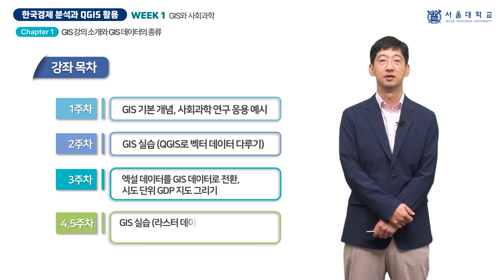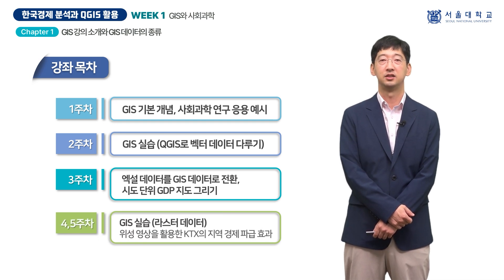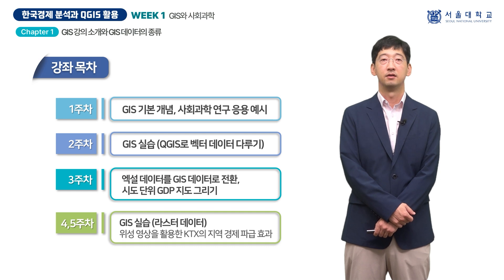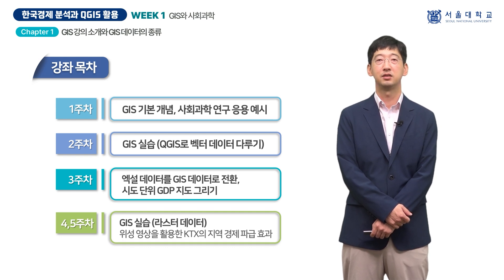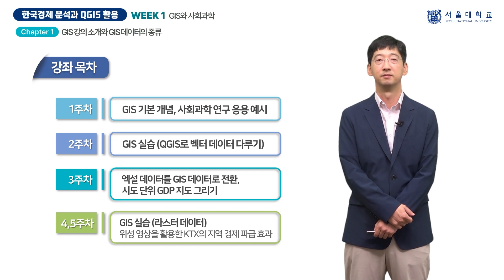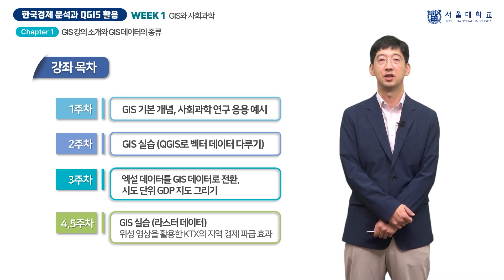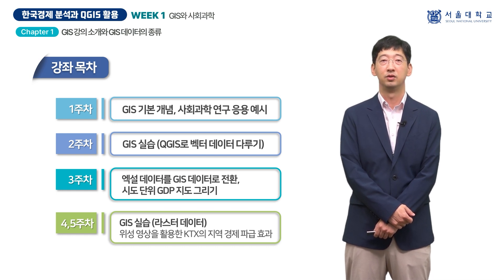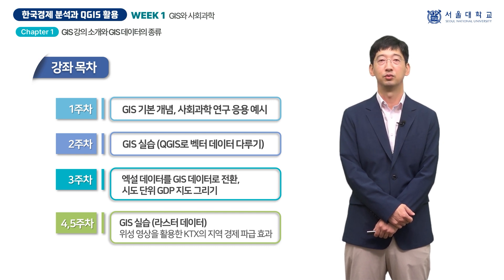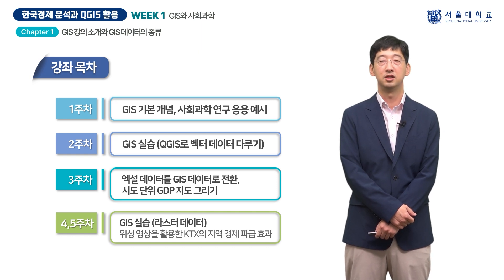4주차와 5주차에서는 벡터 데이터뿐만 아니라 GIS의 또 다른 데이터 형식인 라스터 데이터를 활용합니다. 라스터 데이터는 격자 또는 픽셀 단위로 수치와 위치 정보가 담긴 자료의 형태입니다. 구체적으로 야간 위성 영상 자료를 처리해서 지역 경제 지표를 만들고, 이를 활용해서 KTX에서의 거리에 따른 지역의 경제 활동 정도의 상관관계를 보는 연구의 전처리 과정을 실습합니다.